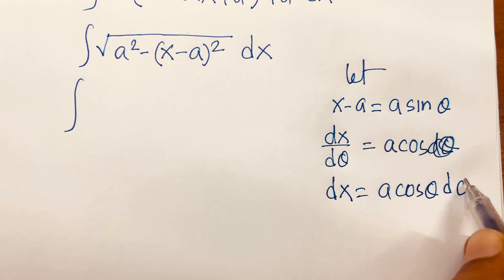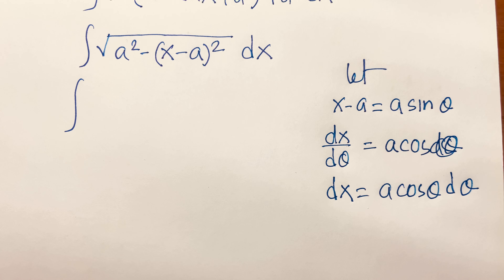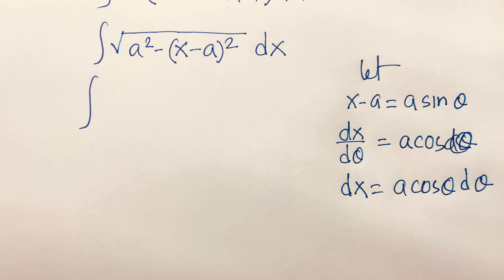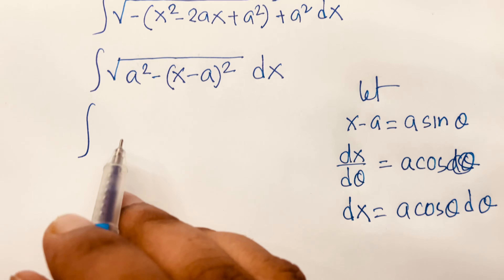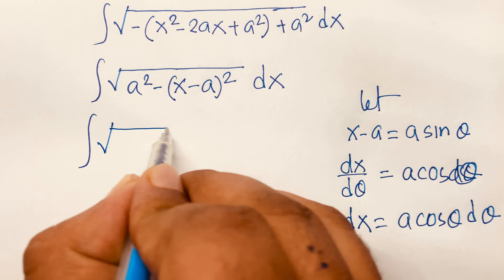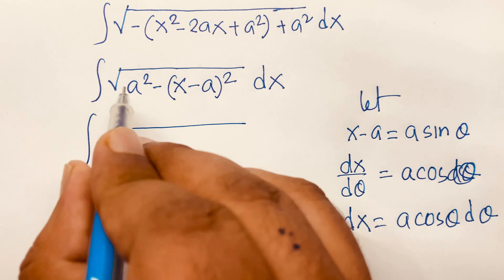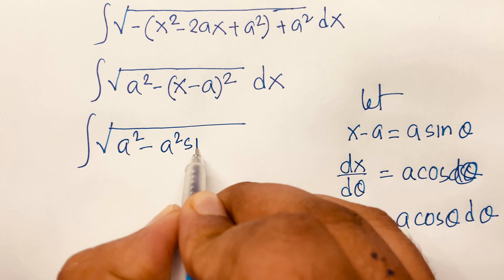This is a². We know that a² − 2ab + b² = (a − b)², so here a is x and b is a, giving (x − a)².